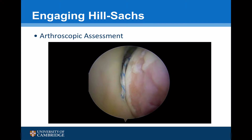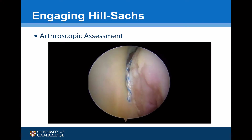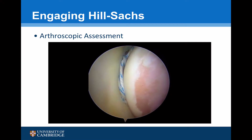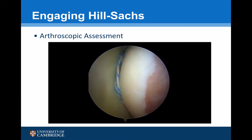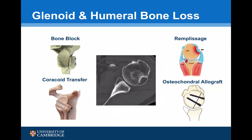Whilst pre-operative CT scans and imaging can give a good indication as to whether there is significant bone loss that would compromise a soft tissue procedure, there is no substitute for the diagnostic arthroscopy. In this arthroscopy of a right shoulder where we are undertaking a revision stabilisation, you can see that the Hill-Sachs lesion is engaging with the anterior edge of the glenoid where the previous soft tissue stabilisation was performed.